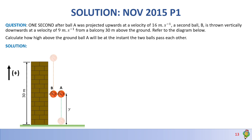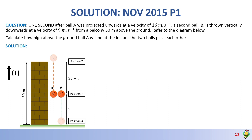The height of the building is 30 meters and from the ground to the meeting point is Y, so the displacement from where ball B was released down to that position is 30 minus Y. For reference, I'll name the positions: where A was thrown up is position X, where they pass each other is position Y, and where B was released is position Z.